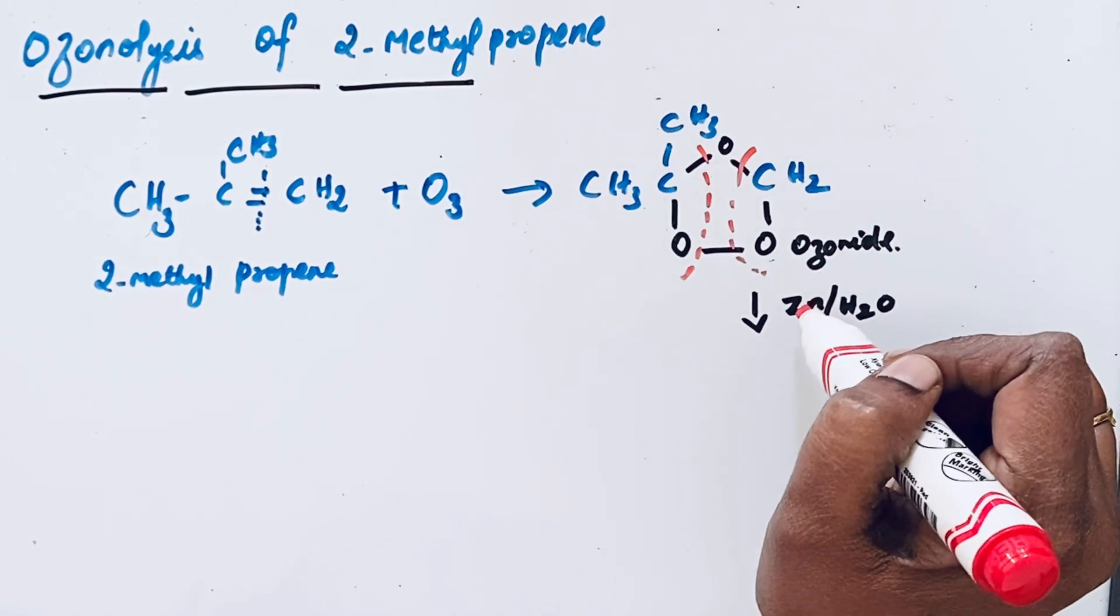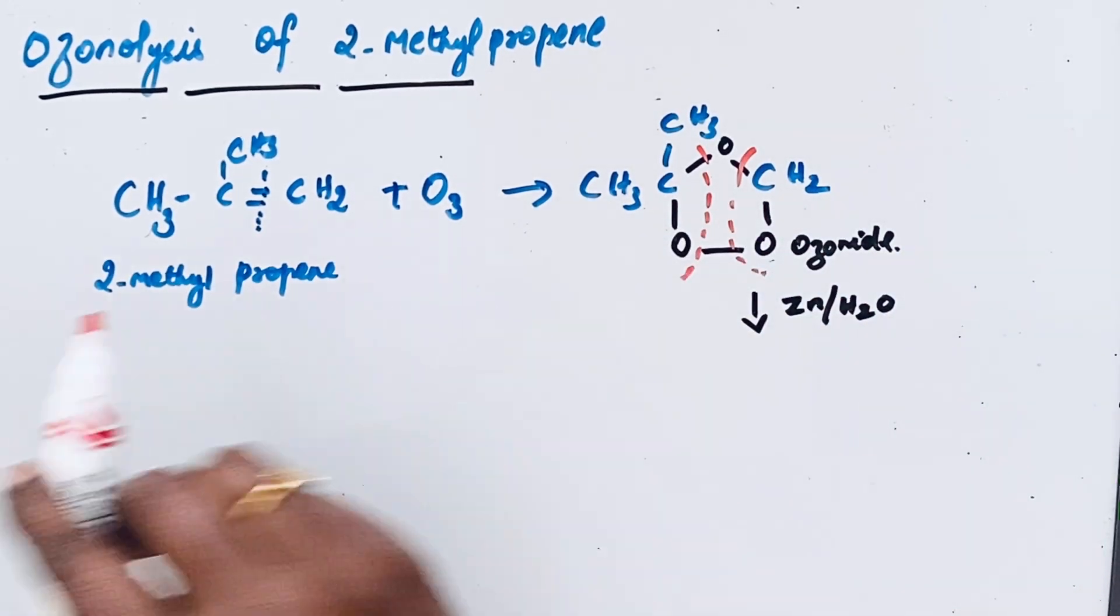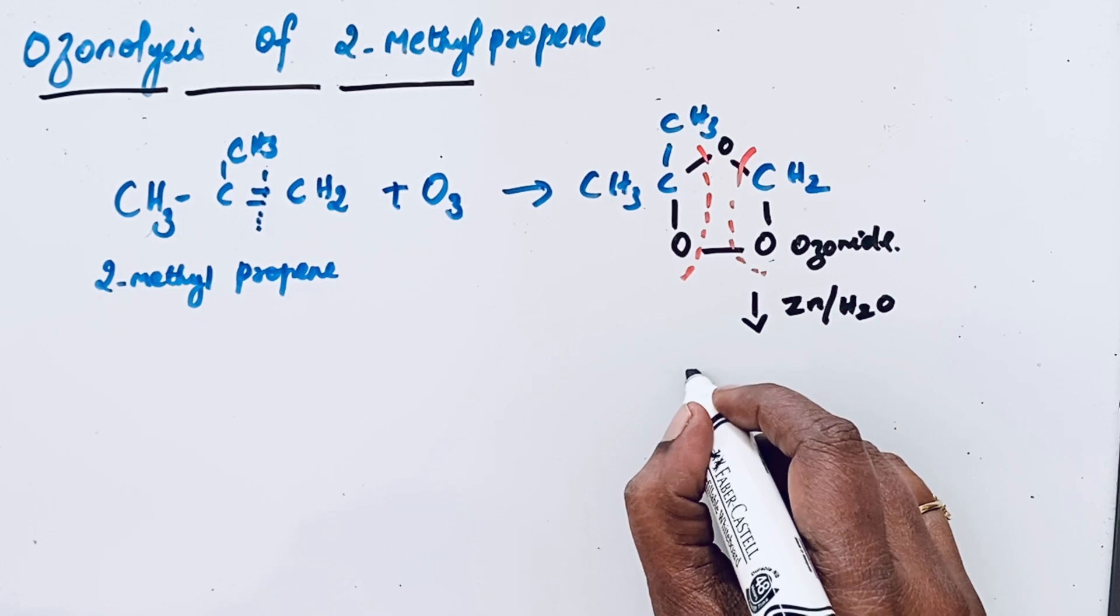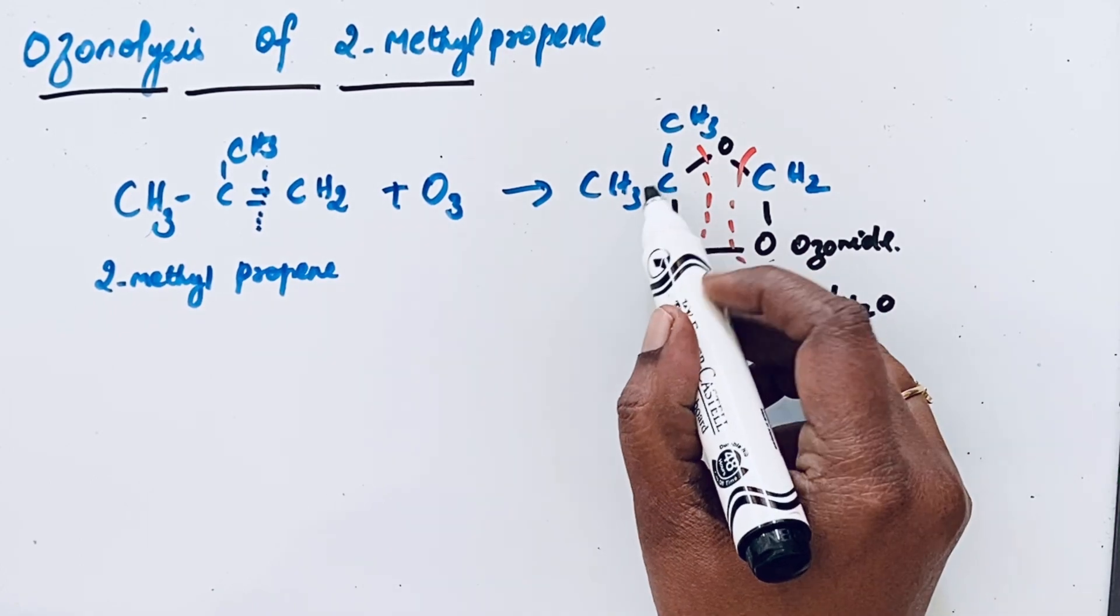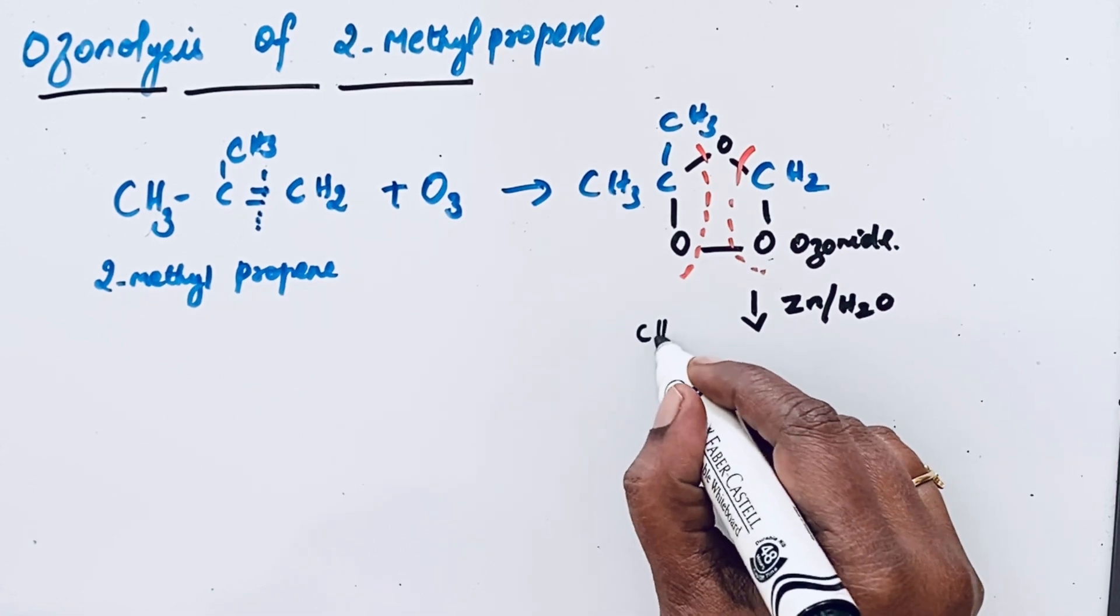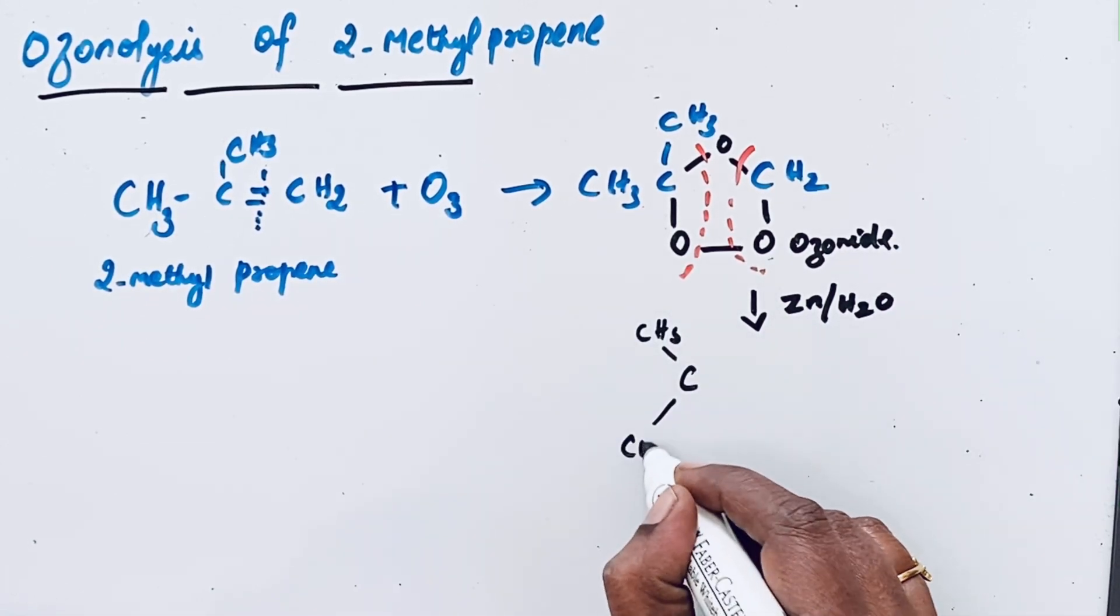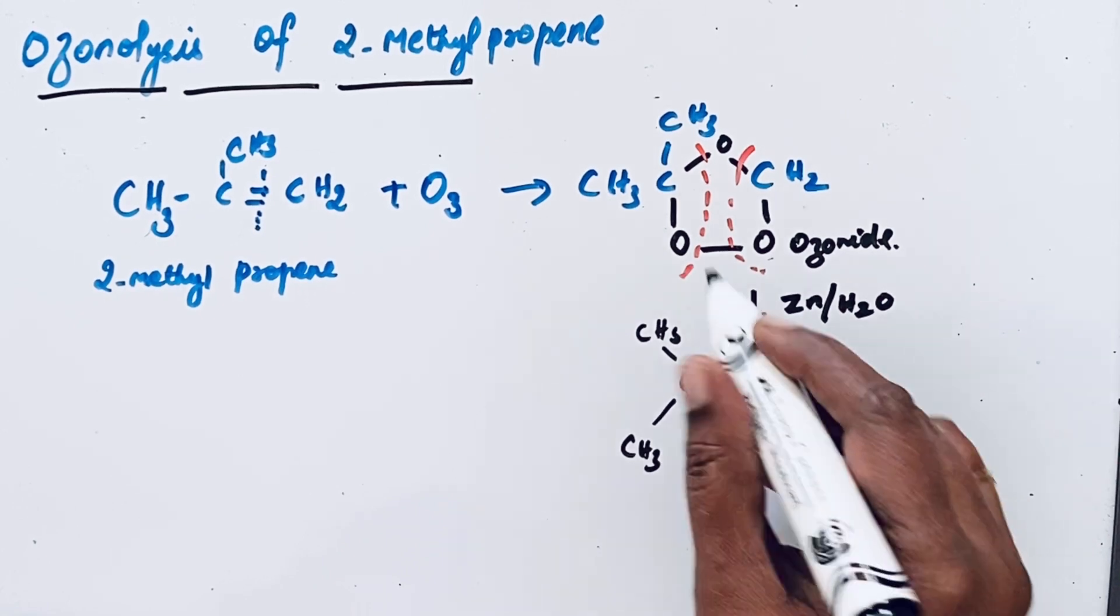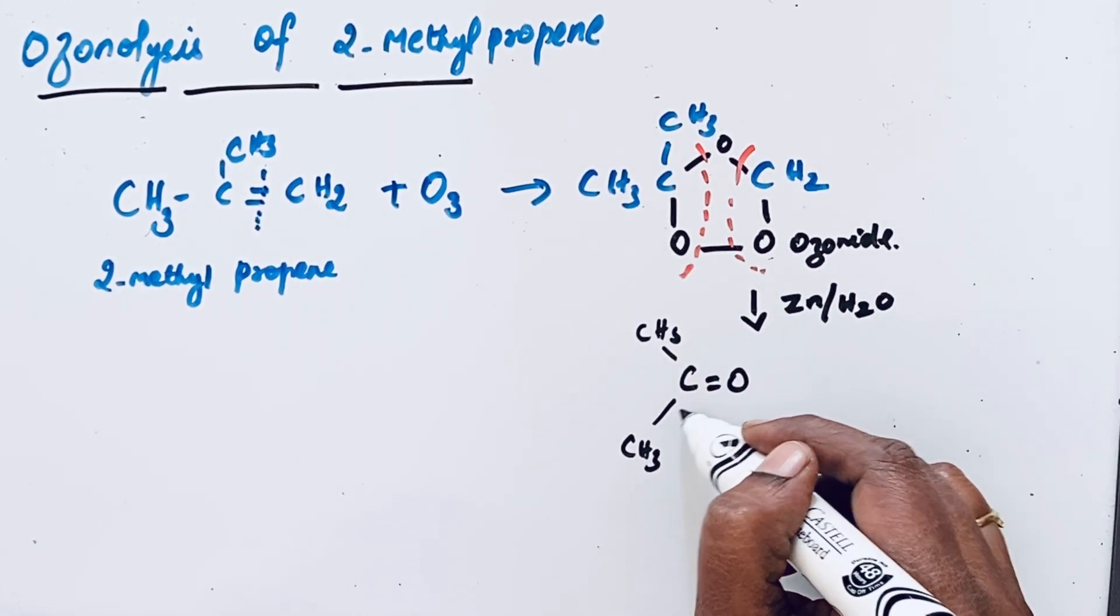This oxygen is taken by zinc, resulting in the formation of CH3, C carbon. This carbon is attached to 2 methyl groups. So CH3, CH3 and then double bond O to satisfy carbon valency.